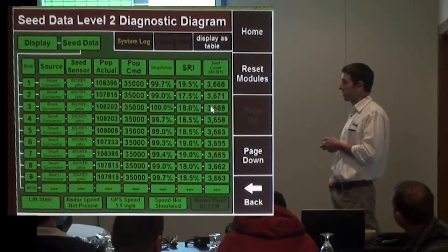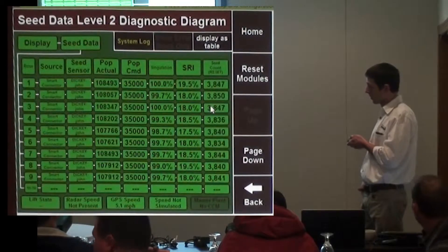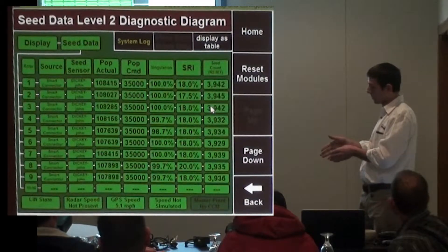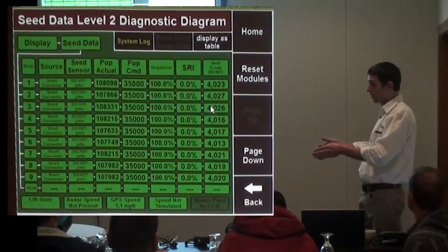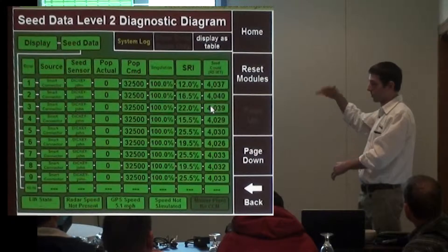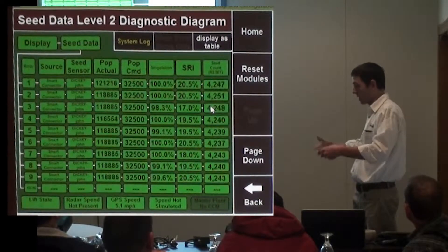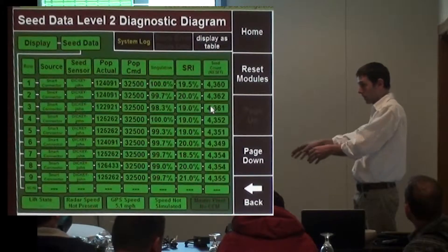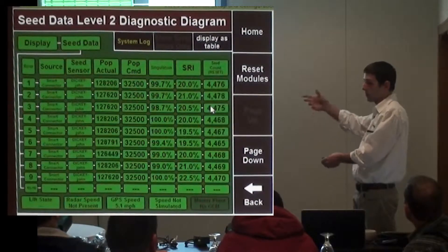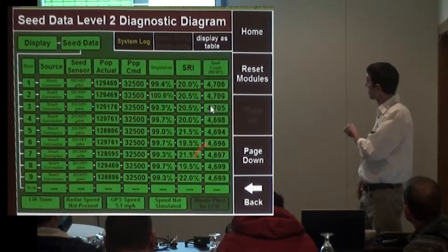I had one situation last year where the population right beside the drive tires on a 24-wheel planter was reading falsely high because the drive tires were kicking up more dust right in that seed tube area, and it was getting too thick in the seed tube and giving it a false population reading.